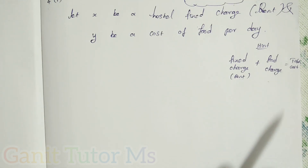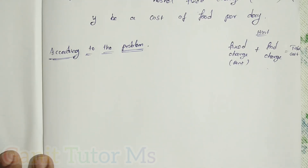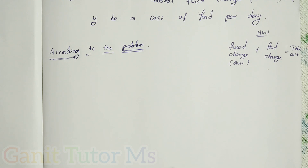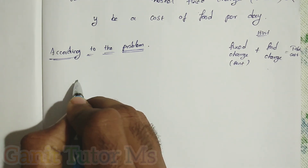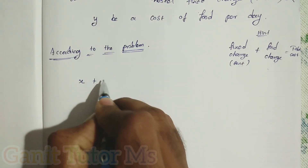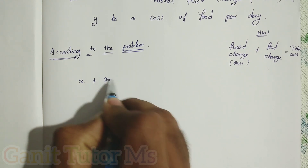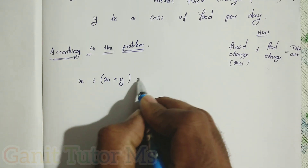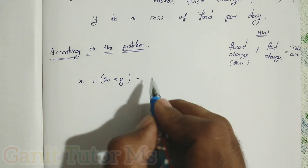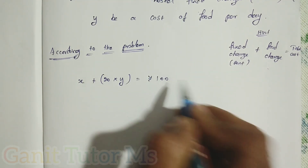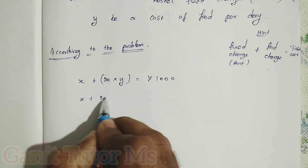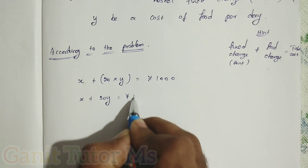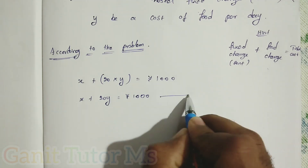According to the first condition: Student A takes food for 20 days and she has paid rupees 1000. So for student A, the hostel charge is x plus 20 days food. Per day food cost is y, so 20 into y. She paid rupees 1000. Therefore, x plus 20y is equal to 1000. This is equation number 1, for student A.